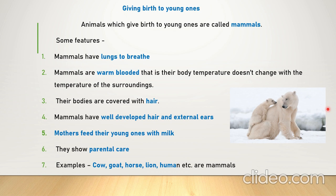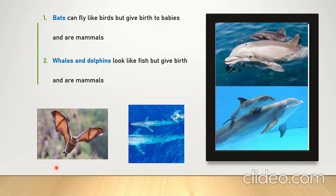Mammals have well-developed brains and external ears. Mothers feed their young ones with milk — for example, a young elephant feeds on milk from its mother. They also show parental care. Examples of mammals are cow, goat, horse, lion, and human. One interesting fact: bats can fly like birds but give birth to babies, so they are mammals. Birds fly and lay eggs, but bats fly and give birth.